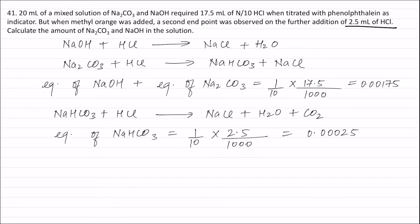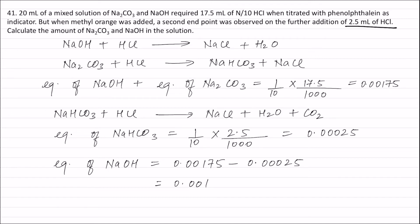The equivalence of NaHCO₃ equals equivalence of sodium carbonate. Therefore, equivalence of NaOH = 0.00175 − 0.00025 = 0.0015 equivalents. Weight of NaOH = equivalence of NaOH × equivalent weight of NaOH = 0.0015 × 40 = 0.06 grams.